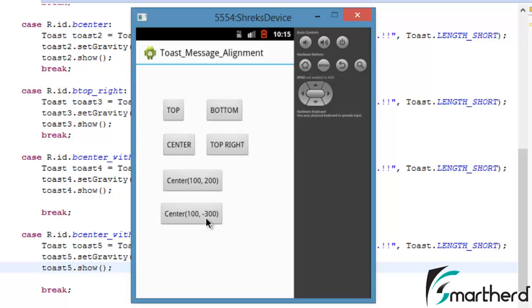Now 100, 300, now see where it will be printed. It is going to be printed at the top, that is in the first quadrant, I think so. X is positive and the Y is negative, so we are able to see the Toast message right here.